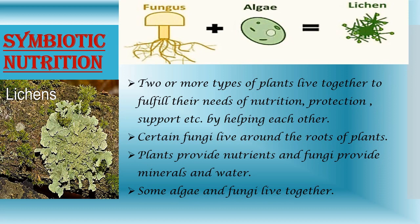Certain fungi live around the roots of plants. These plants provide nutrients to the fungi, and in return, fungi provide minerals and water from the soil to the plants. Some fungi and algae live together — for example, lichen. In this relationship, fungi provide water, minerals and shelter to algae, and in return, algae provide food to the fungi.